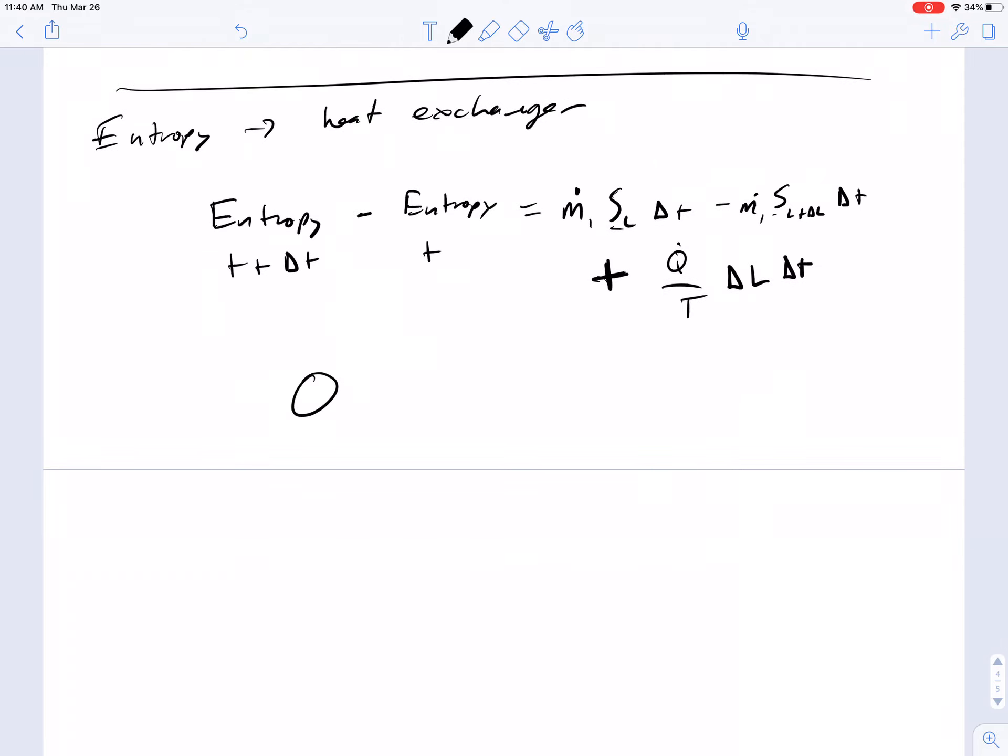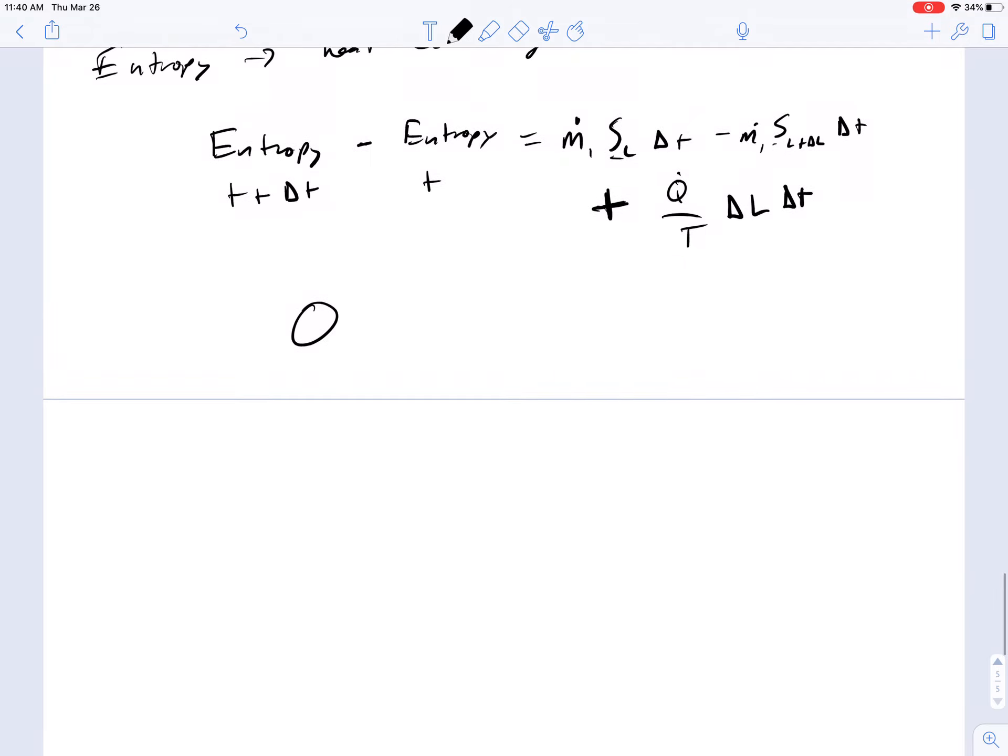This is at steady state again, so there's going to be no entropy change in that little control volume as a function of time. And so we're going to use this to rearrange the entropy balance equation.